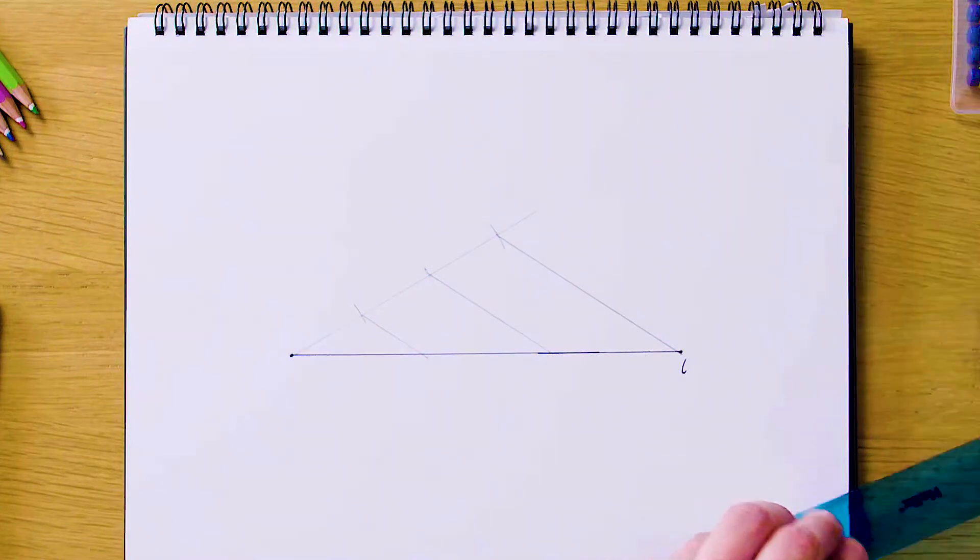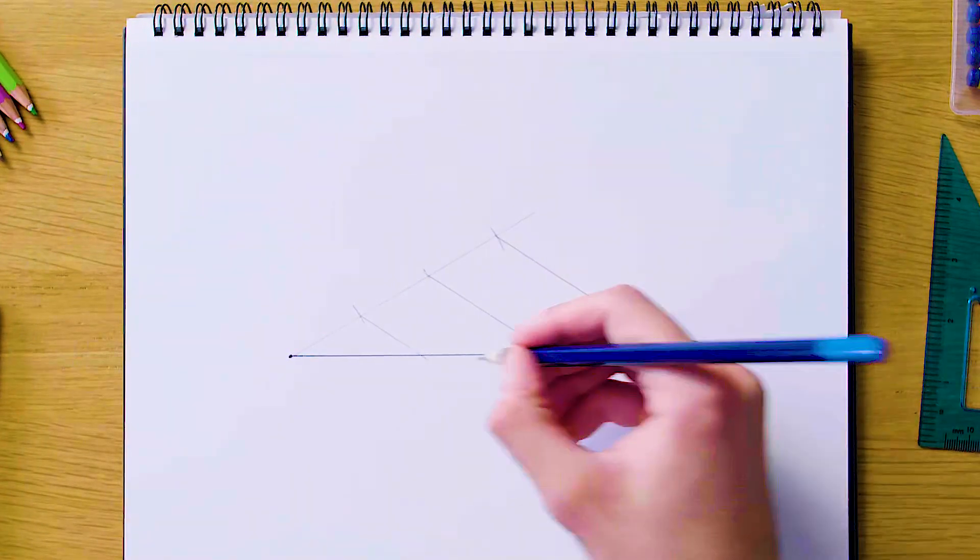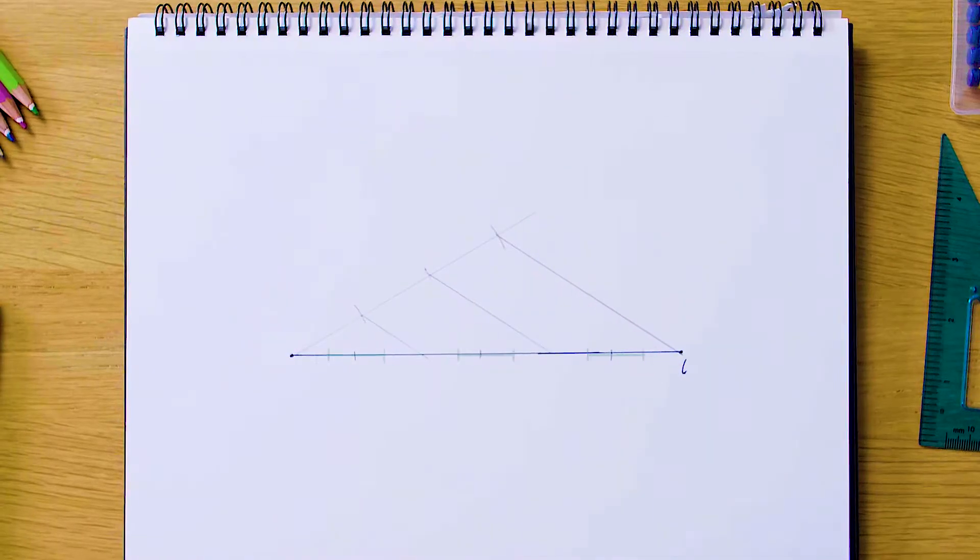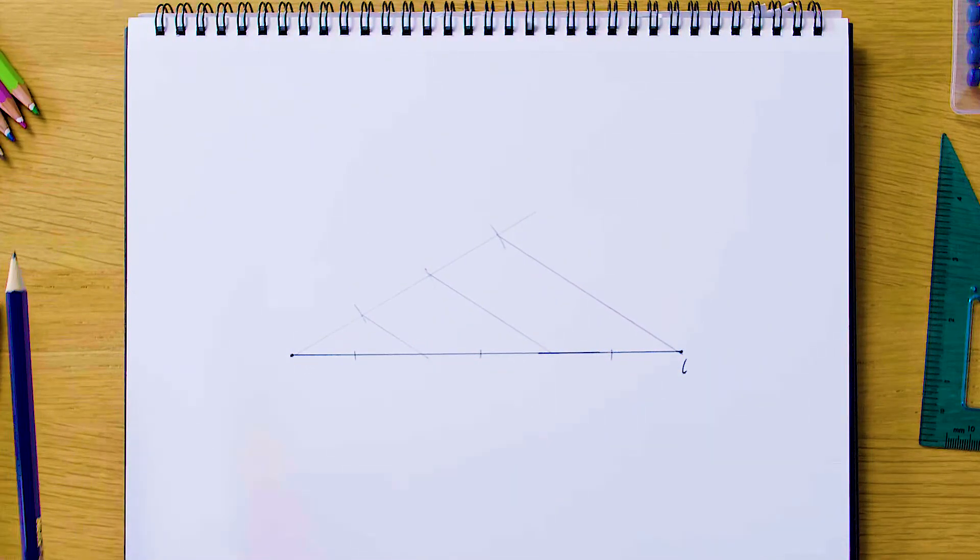So this is what our line is going to look like now that it's equally divided. As you can see, we have three equal divisions here, here, and here. That is it for this construction, and see you next time.